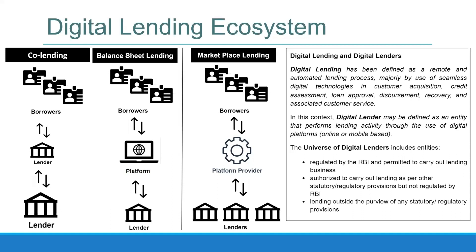In both cases, whether it's a platform or a sourcing lender, the sourcing agent gets a fee. The lender lends to the borrower and earns interest. The fee is not fixed per customer — it's generally based on the interest differential. For example, a lender agrees to lend at 15%, and the platform offers borrowers a rate of 20-24%. The difference between 15% and 20% or 24% goes as commission or fee to the platform or the sourcing lender.